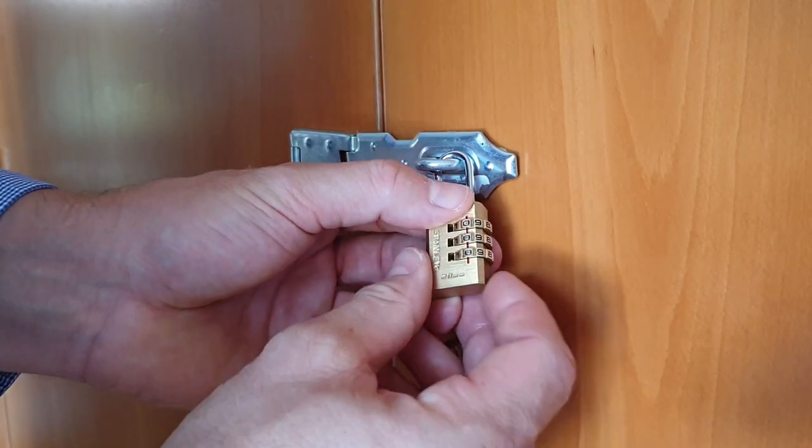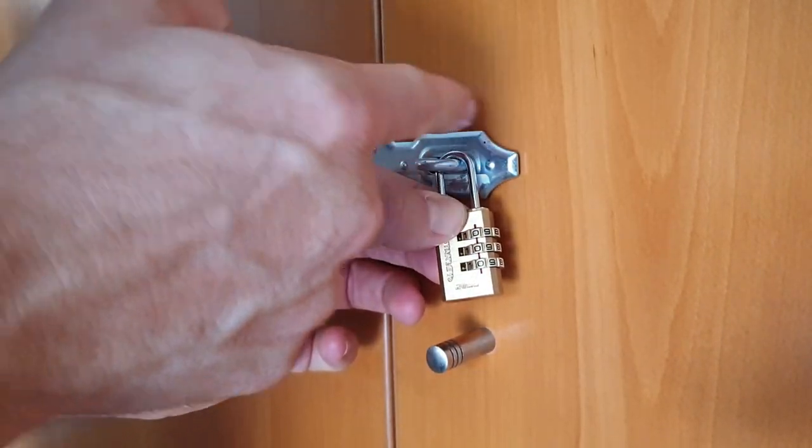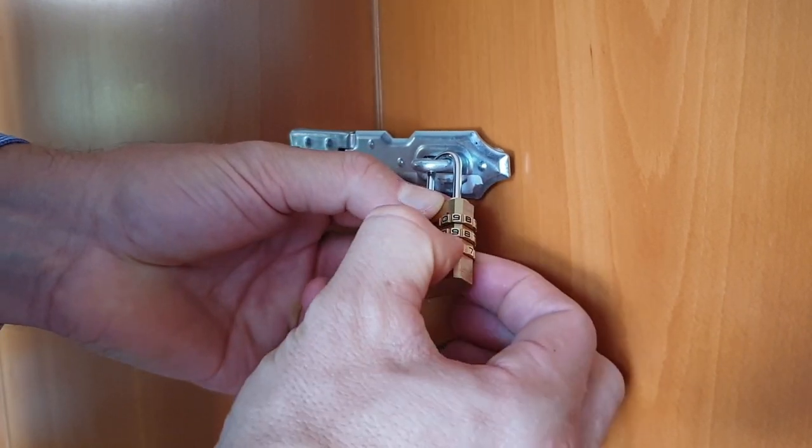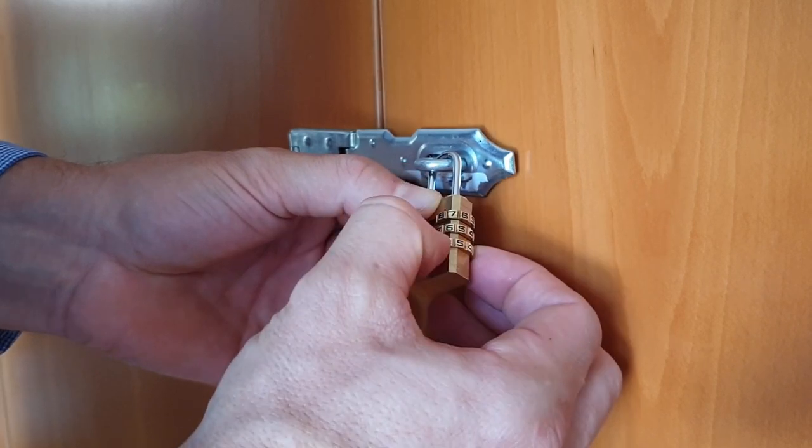First, you need to push down the body of the lock so you put some pressure on the shackle, and then you start spinning the digits and try to find which is the one that's hardest to spin.